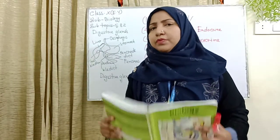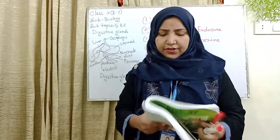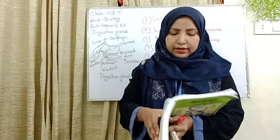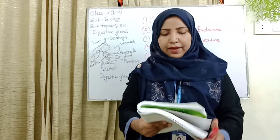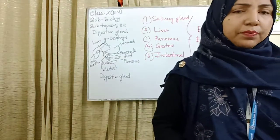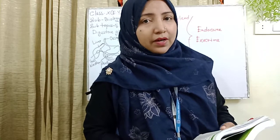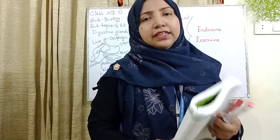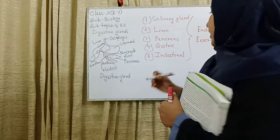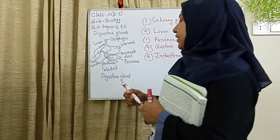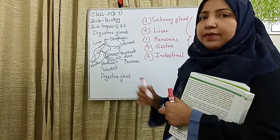Another topic is the liver. Do you know the other names of the liver? Different types of biochemical reactions take place in the liver, so it is called the organic laboratory. I will now explain the liver — what it is and where it is located. The liver is on the right side, below the diaphragm.